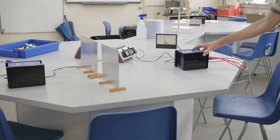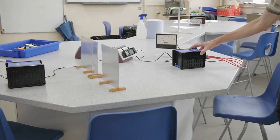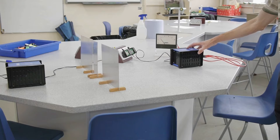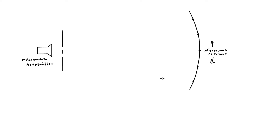So as we are moving the receiver across, we are getting a series of maxima and minima detected on the microwave receiver. This diagram shows the kit we had set up: our microwave transmitter as the source of microwaves, along with the double slit. What is happening is the microwaves travel from the transmitter and are incident on this double slit.